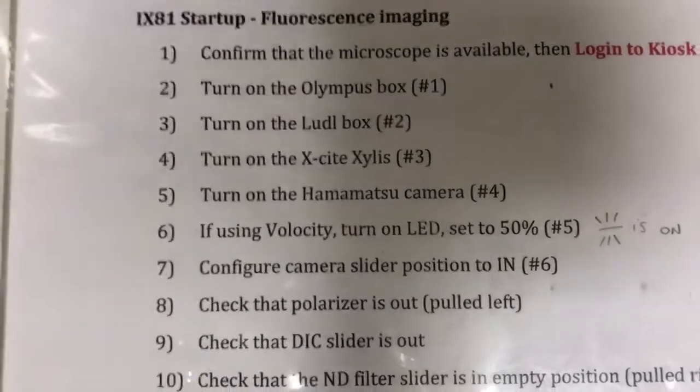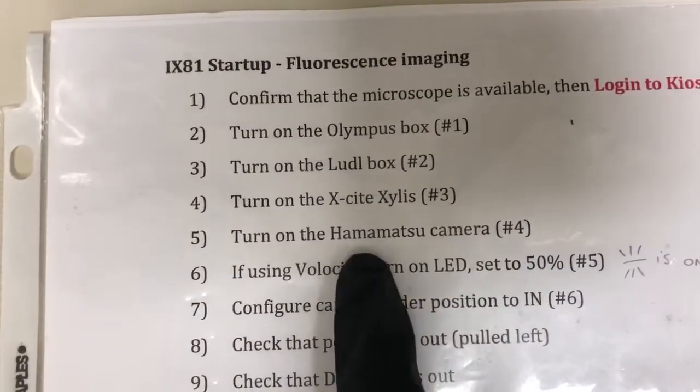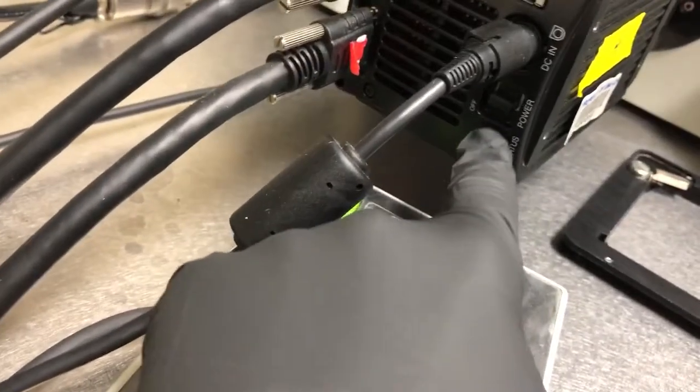If you're using velocity, excuse me, I skipped a step. Next is to turn on the Hamamatsu camera. That's number four. So the camera is here and we turn it on at the back. There's the power switch. You'll see a light turns on.